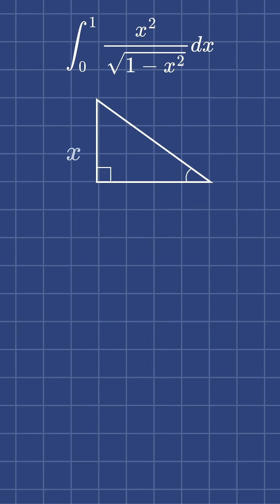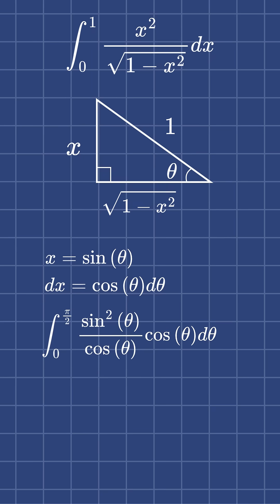Looking at the form of this integral, I think we should try a trigonometric substitution. With x equal to sine theta, we can substitute that into our integral and set dx as equal to cosine theta d theta. We also need to remember to change our bounds.